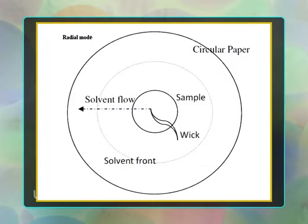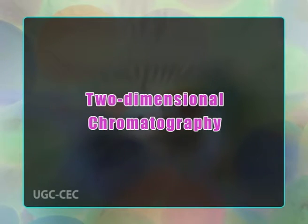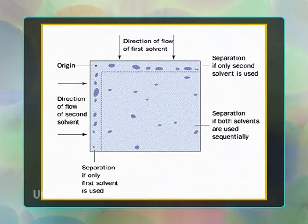In radial mode, the wick at the centre of the paper dips into the mobile phase in a petri dish, by which the solvent drains onto the paper and moves the sample radially, forming sample spots of different compounds as concentric rings. In 2-Dimensional chromatography, the chromatogram development occurs in two directions at right angles. Samples are spotted to one corner of rectangular paper and allowed for the first development, then the paper is immersed in mobile phase at a right angle for a second chromatogram.